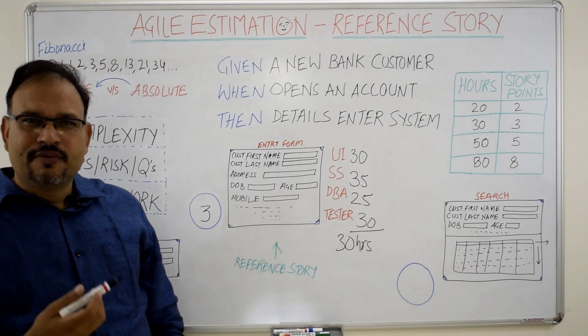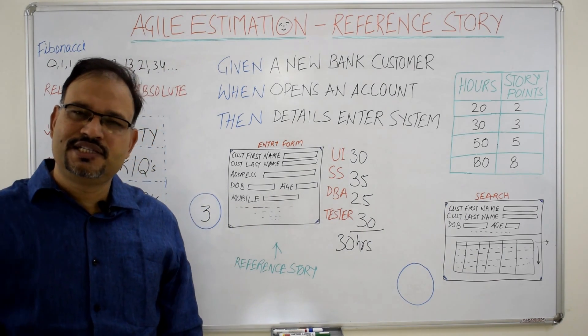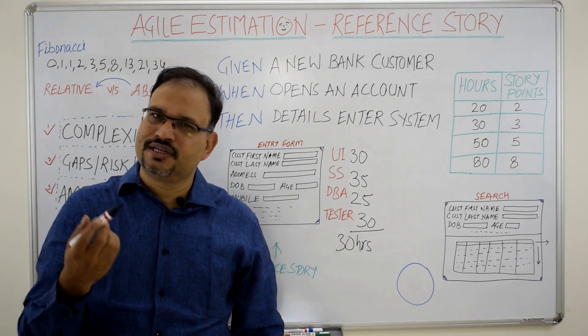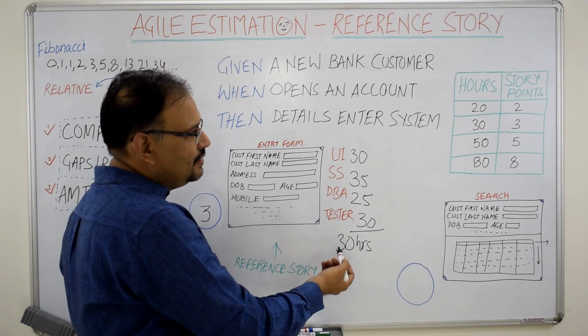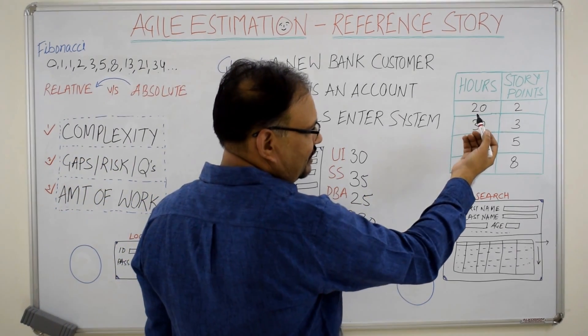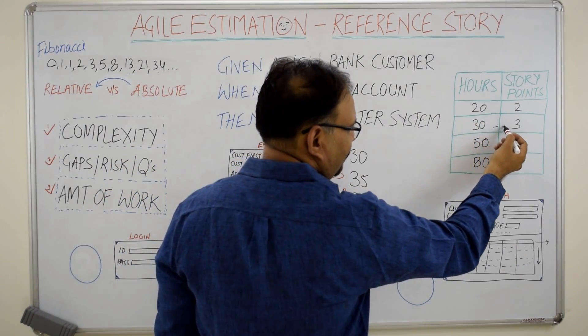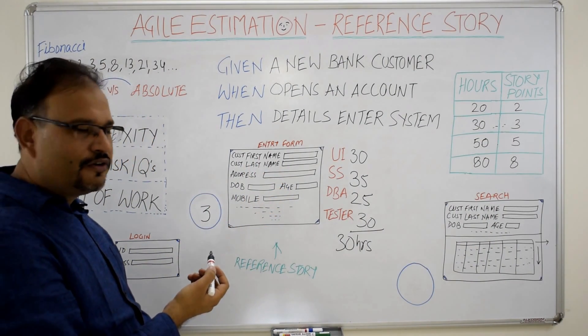These numbers come from based on our prior experience of the projects and something that the Agile CUE might have determined. So it all depends from project to project, set up to set up, organization to organization. I will pick up these 30 hours from here, go to this table and see what is the story point it is attracting, the story point of 3. So 3 becomes the story point of my reference story.